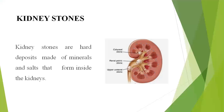When urine becomes concentrated, crystals of salts like calcium oxalate, ammonium phosphate, and uric acid form. When these crystals become large, they cannot pass in the urine and form hard deposits.